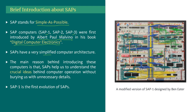Let's take von Neumann architecture for example. In von Neumann architecture, a computer should have three parts: a processing unit, a control unit that controls the whole system, and a memory that contains data and instructions. Modern computers follow these fundamentals. Our SAP-1 will also follow these fundamentals — it will contain a processing unit, control unit, and memory unit.